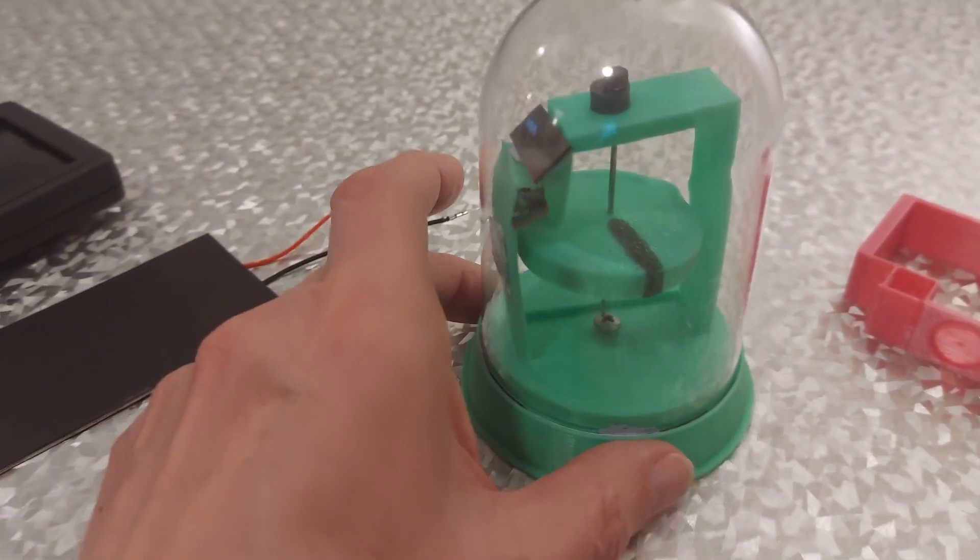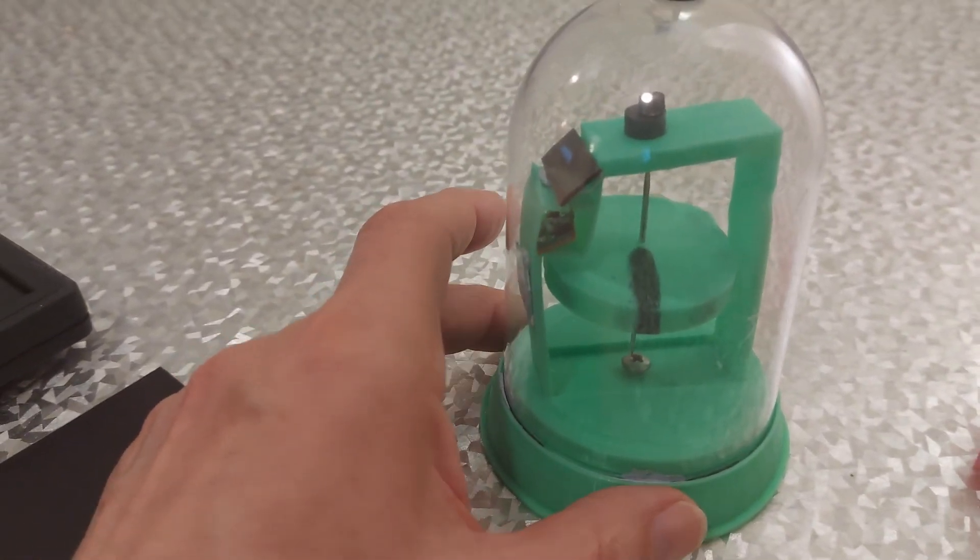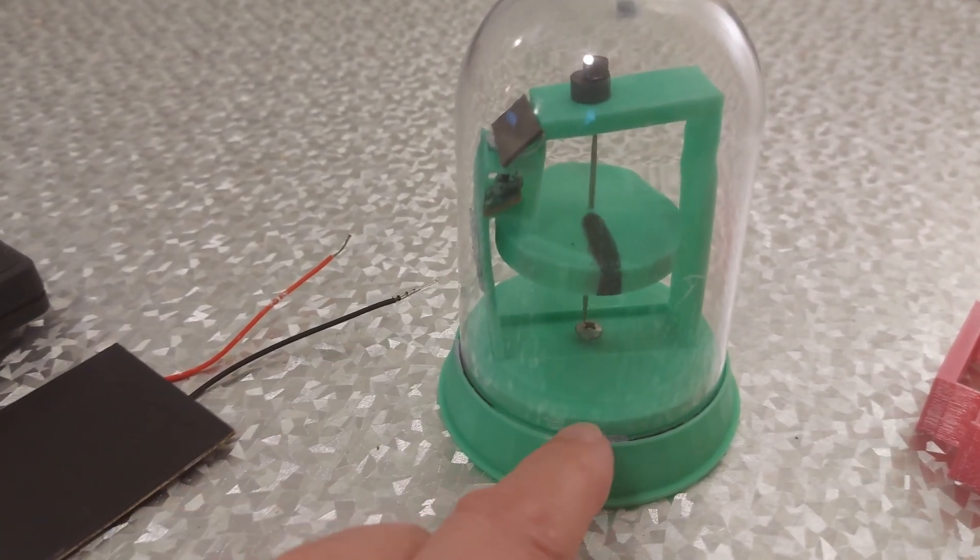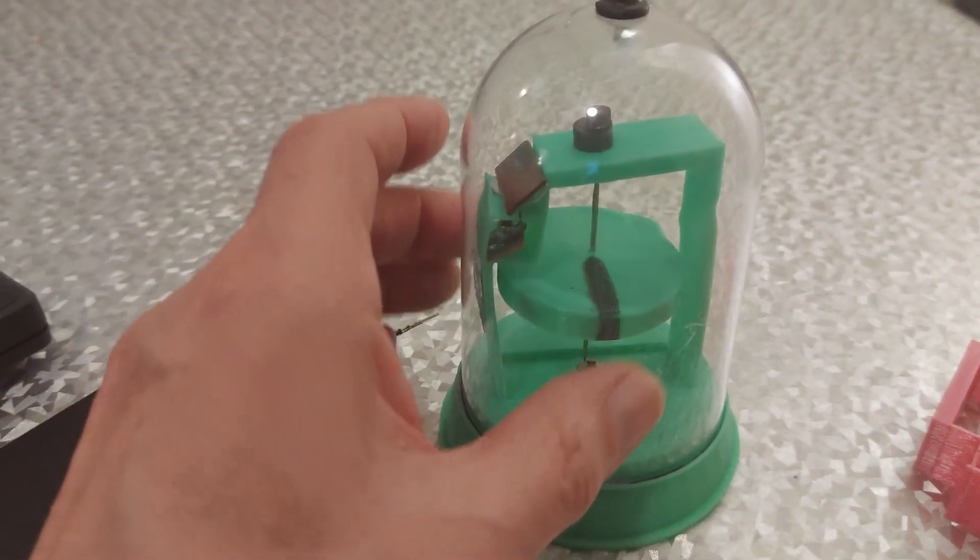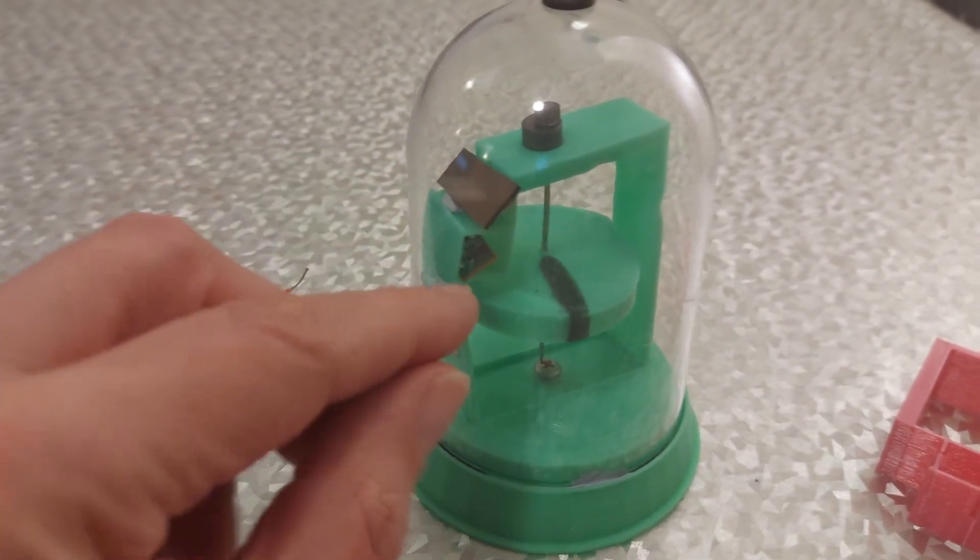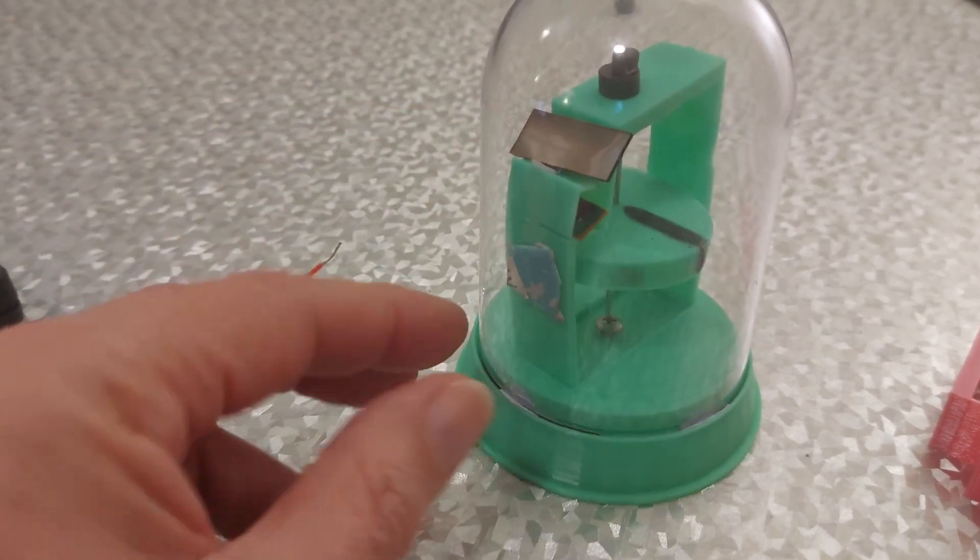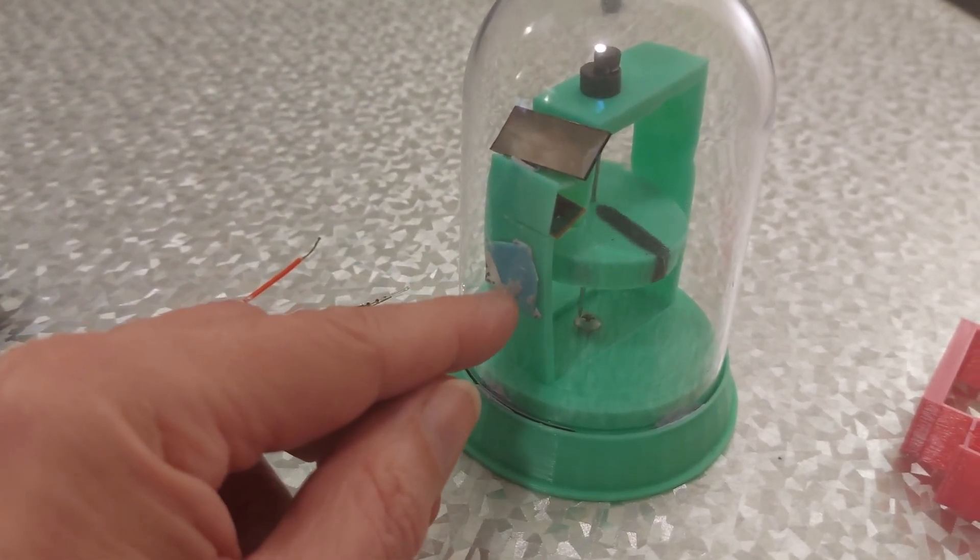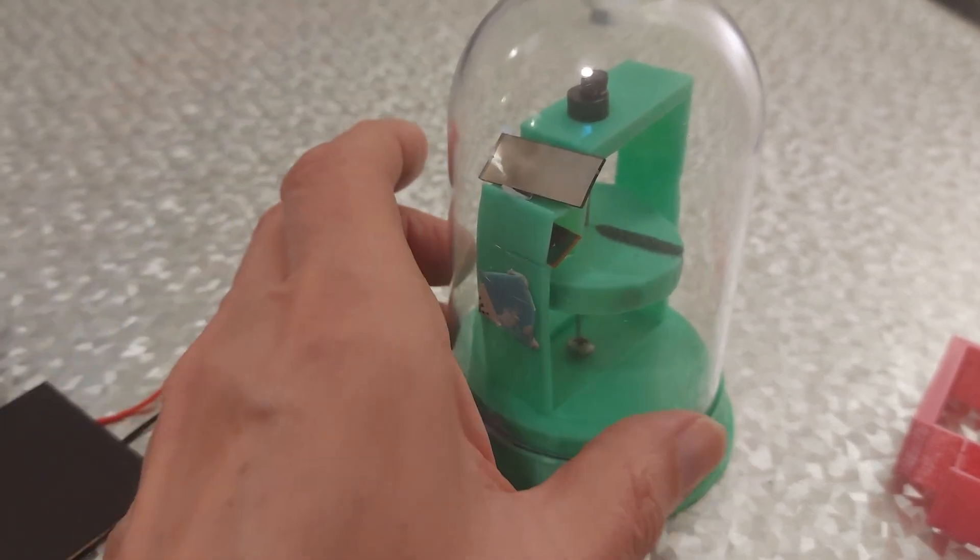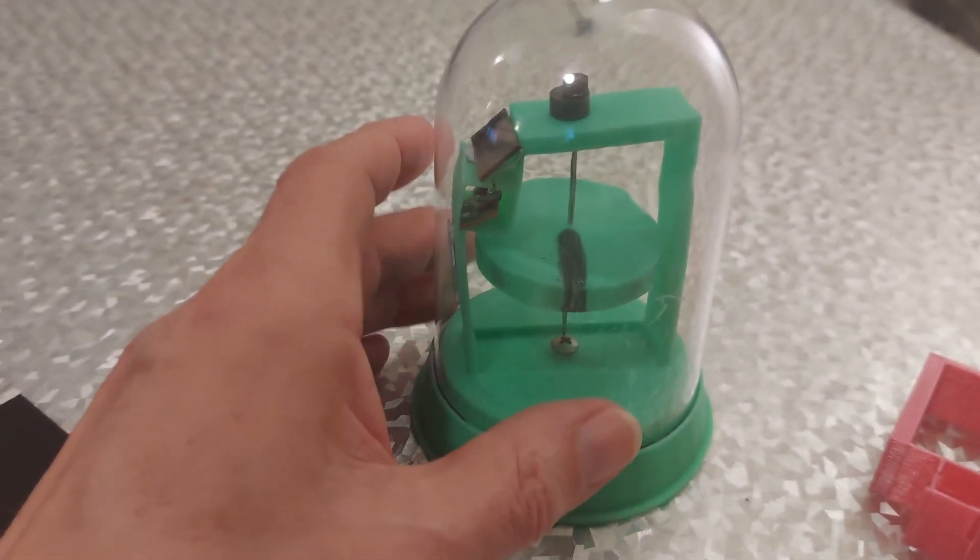This is a pulse motor I made last year or the year before. It's all 3D printed parts in a nice cloche. The circuit board and the coil, which you can't really see just there, and the little solar panel are from a solar rocker. And it does work.